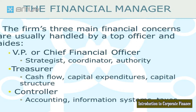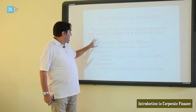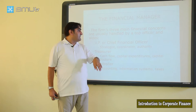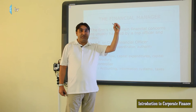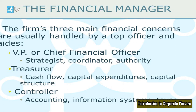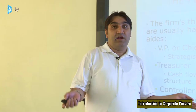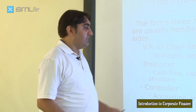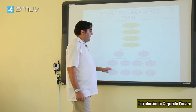In a company, these functions are carried out by finance managers. The three main financial concerns are usually handled by the top officer and assistants. The first is the Vice President or CFO (Chief Financial Officer), the top finance position in a typical company — strategist, coordinator, and main authority for making decisions on financial issues. Under the CFO there are the Treasurer (handling cash flow, capital expenditures, and capital structure) and Controllers.